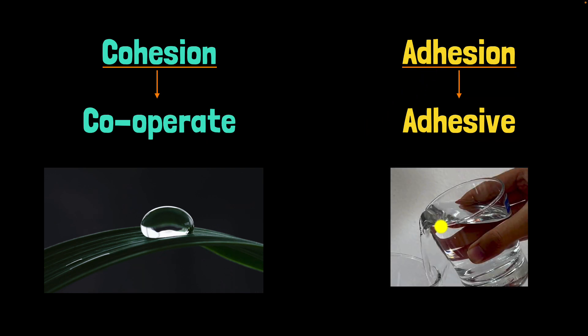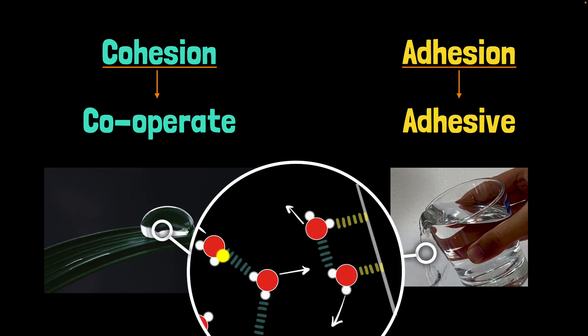And this is one of the reasons why, for example, when you pour water from one glass to another, you end up spilling it. Or at least I end up spilling it. And remember, both of these arise from the water molecule's magnet-like properties to stick to each other and to others.